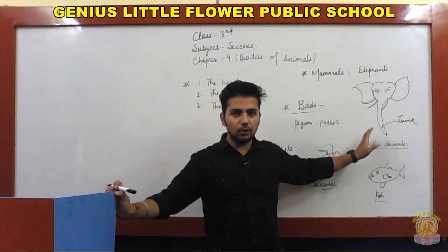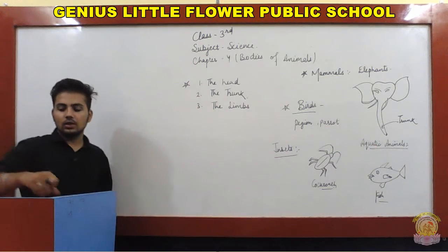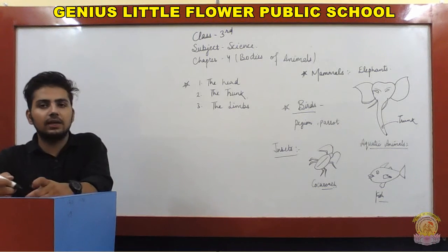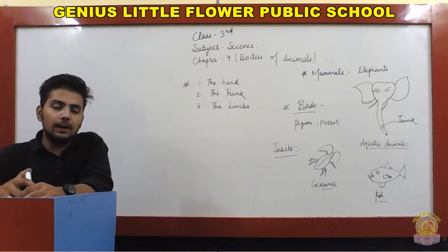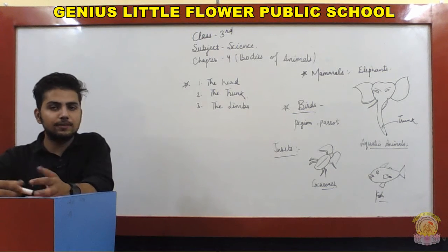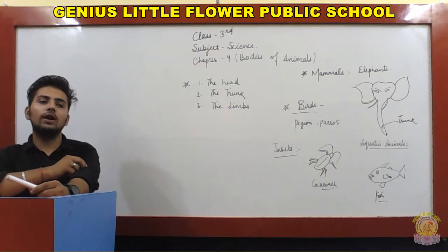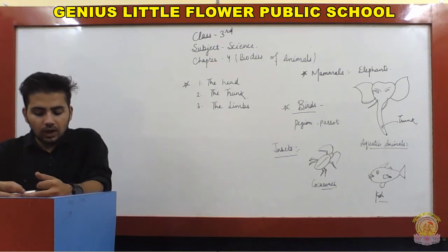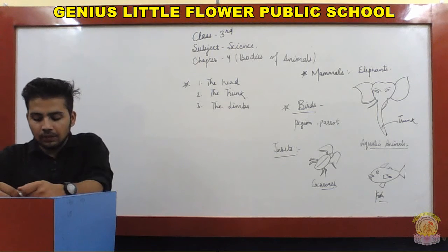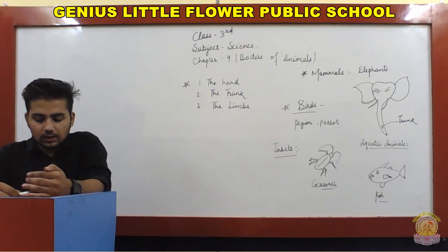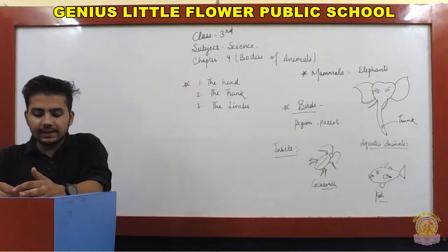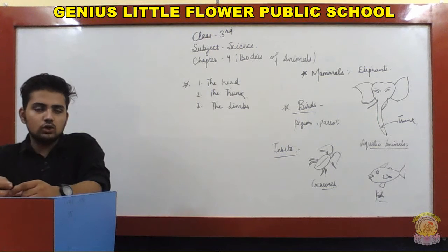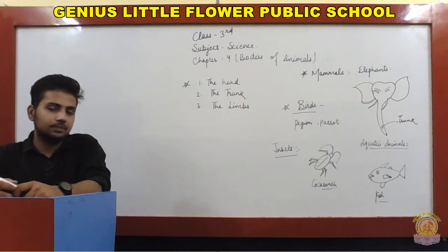Now moving to the next category which is birds. Birds include pigeon, crow, parrot, and sparrow. A bird's body mainly consists of head, trunk, wings, legs, and tail.